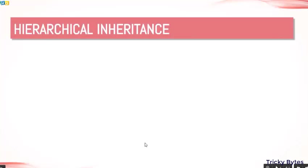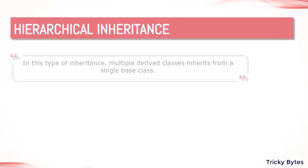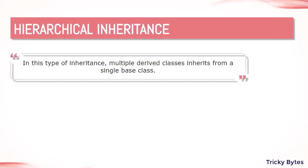Now we have hierarchical inheritance. This is the type in which multiple derived classes inherit from a single base class. It is like our family structure: we have a grandfather, then father, then ourselves — a chain. The property of the grandfather goes to grandfather, then to father, then to son. Multiple derived classes all inherit from one single base class.